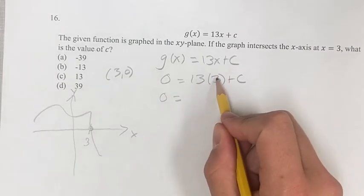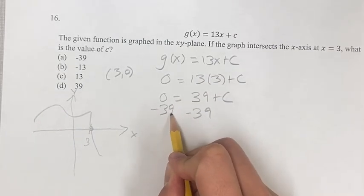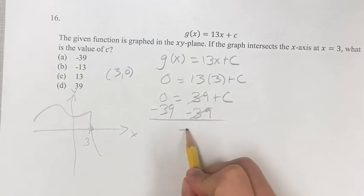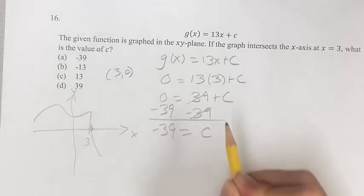13 times 3 is 39 plus c. Subtracting 39 from both sides to get c on its own gives us c is equal to 0 minus 39, which is negative 39.